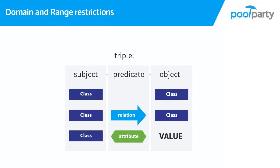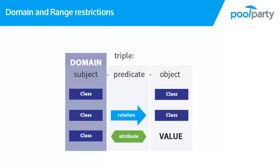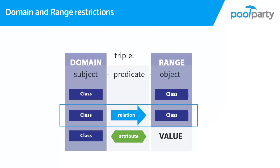Domain and range are a way of saying which classes are allowed to be in which positions of a triple, describing which triples you can build with the classes, relations and attributes in your ontology. When you specify which classes can be related to which other classes, or which classes can have which attributes, you are defining domain and range restrictions. The domain is the class that can be in the subject position of a triple, and the range is the class that can be in the object position. Relations have both a domain and a range, while attributes only have a domain and no range.